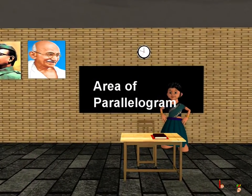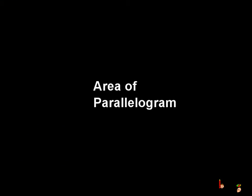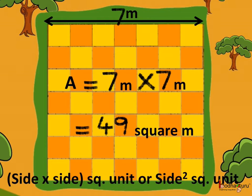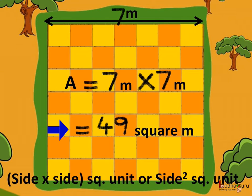Good morning children. Today we shall learn how to calculate the area of a parallelogram. We already know how to calculate the area of a square and the area of a rectangle. The area of a square is side multiplied by side, that is side squared square units. For example, if the side of a square field is 7 meters, then its area would be 7 multiplied by 7, that is 7 squared or 49 square meters.